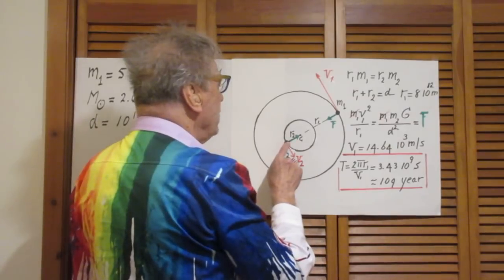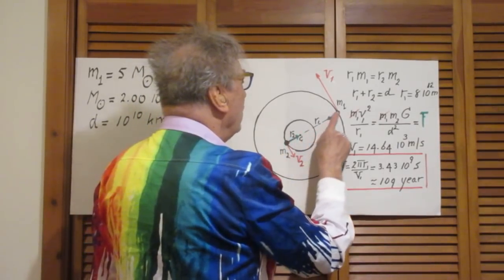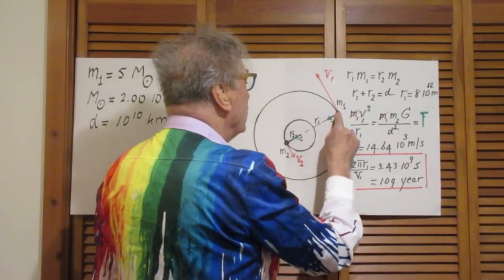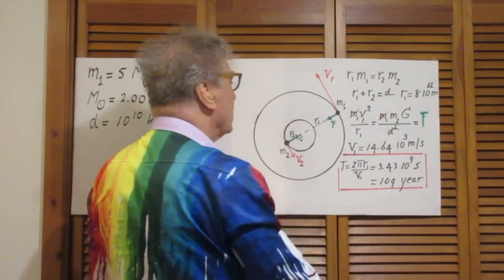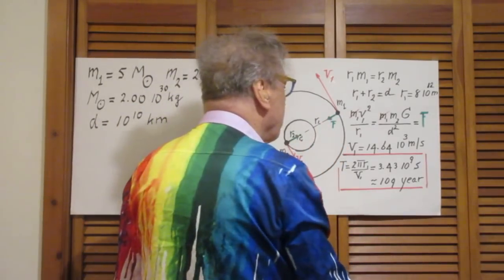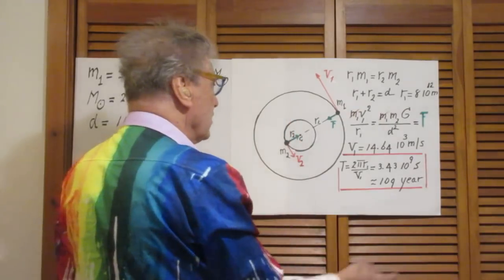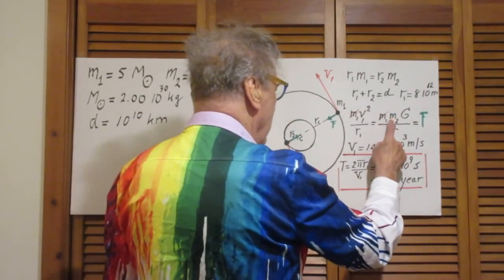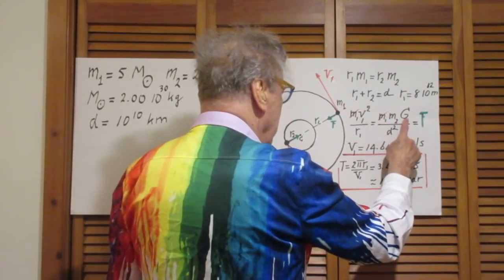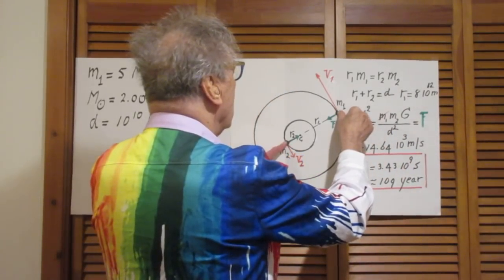The gravitational force. The gravitational force on this star is in this direction and on this star is the same magnitude in this direction. That force, f, is the gravitational attraction, which is m1 times m2 times the gravitational constant divided by d squared. Okay, this is d, from here to here.